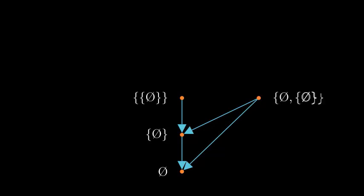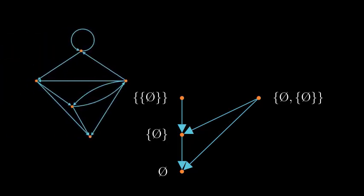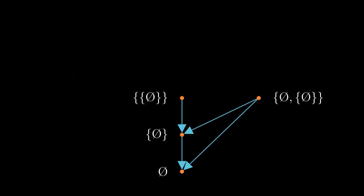Each set corresponds to a node in the graph, and whenever one set is an element of another, we draw an arrow between them, with the arrow pointing from sets to their elements. Looking familiar yet? There are a lot of directed graphs out there, and most, like this one we saw earlier, won't represent sets. So what makes a directed graph a graph of sets? Obviously it would have to be infinite, because there are infinitely many sets, so I can't just draw it out for you.